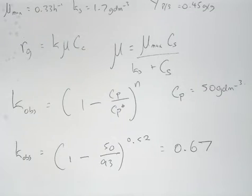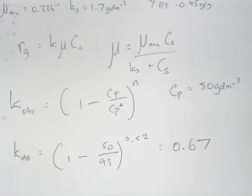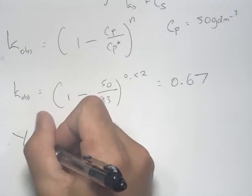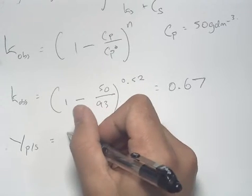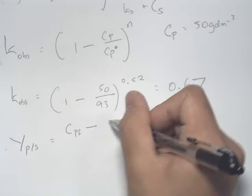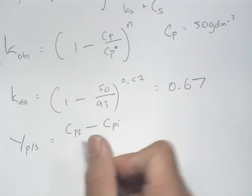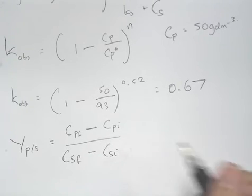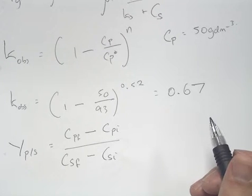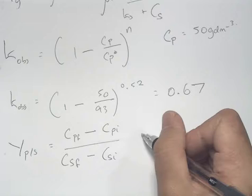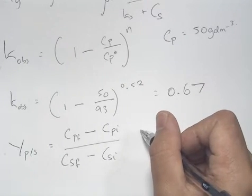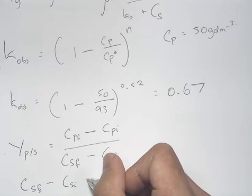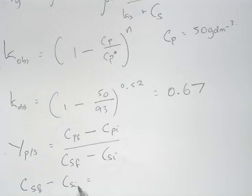Then we can find the product over substrate yield in order to find our substrate concentration at the end of our growth period. For this, we have our product over substrate yield equal to our final product concentration minus our initial product concentration over our final substrate concentration minus our initial substrate concentration, expressed in terms of CSF minus our initial substrate concentration.